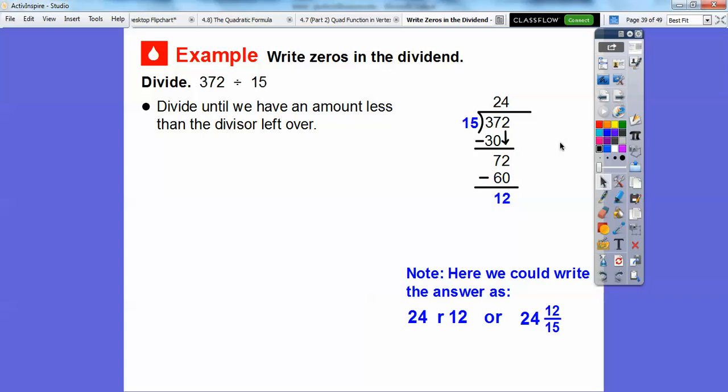From before, we would have stopped right there and said the answer was 24 with remainder 12. Or we would have said 24 and 12 fifteenths. You start at the top and go clockwise. You remember talking about that from before? So 24 and 12 fifteenths. But what we're going to do is write zeros in the dividend. So we're going to put a decimal right there and write a zero.